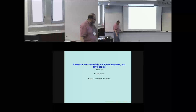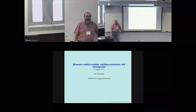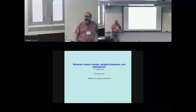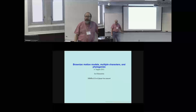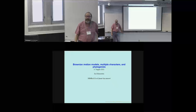Brownian motion is, of course, random jiggling of molecules. It was discovered by Robert Brown in the 1820s. Interestingly, Robert Brown was a botanist — not a physicist or mathematician. He was an expert in microscopy. He's the first person to make the distinction between the monocots and the dicots, and he's also the major discoverer of the cell nucleus. So incredibly important work.